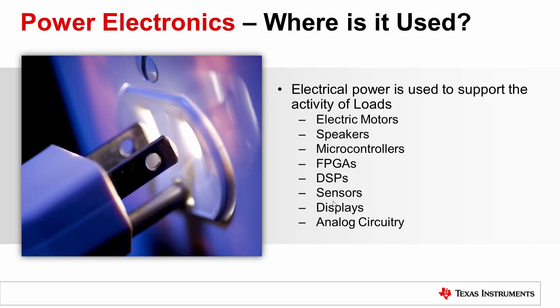So where is power electronics used? We've discussed what power is and why it is important. To be more specific than just everywhere, power is used to support the work of loads. Electric motors, like in a vacuum cleaner or electric car, require appropriate voltages and currents to operate. Home theater speakers receive power over speaker wire sent by a receiver. Microcontrollers are common in embedded applications, supporting the activities of washing machines, microwave ovens, and functions in automobiles. FPGAs are becoming more frequent in data centers due to the performance per watt advantage versus other technology, and are used to accelerate high-performance, computationally intensive tasks like those performed by search engines.